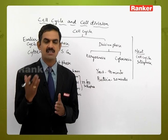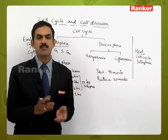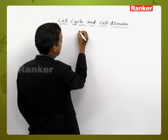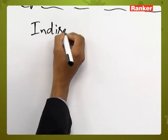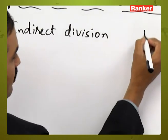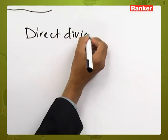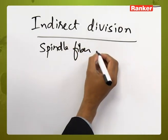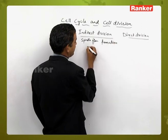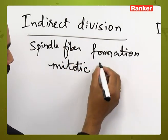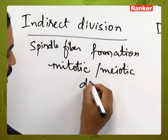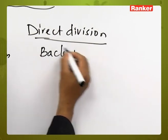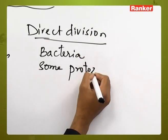In some organisms, the cell cycle may be extended for days, sometimes weeks, or even years, depending upon the metabolic activities performed by the organism and the environmental conditions surrounding it. In living organisms, there are two types of divisions: indirect division and direct division. In indirect division, spindle fiber formation is present, occurring by either mitosis or meiosis.